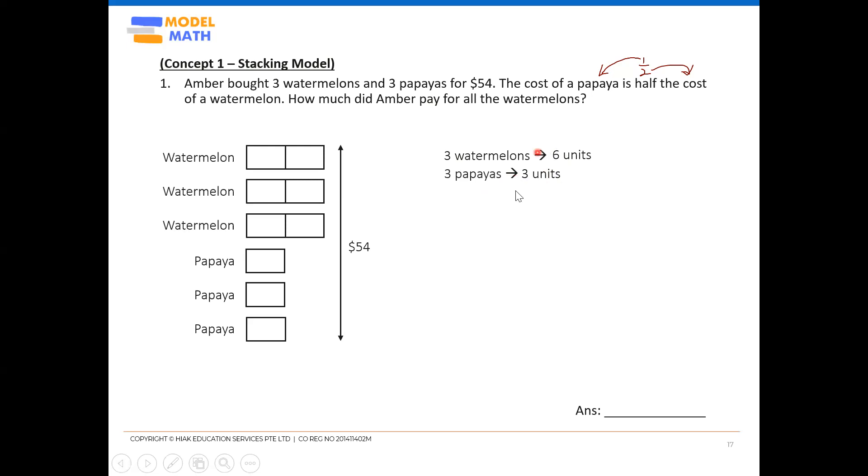I personally don't think this is necessary. So long as you can count right away from the model. So there are total of nine units. Nine units will be $54. This is fine. If you straight away use this as your first step, it's okay because you can simply count from the model.